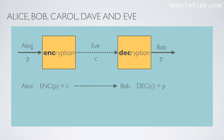In this simple example, Alice sends Bob an encrypted message. She encrypts the plain text message into a cipher text and sends the cipher text to Bob. Eve is evil and can intercept the cipher text. However, she cannot read the message because it is encrypted. Bob receives the cipher text and decrypts it to get the plain text message back.